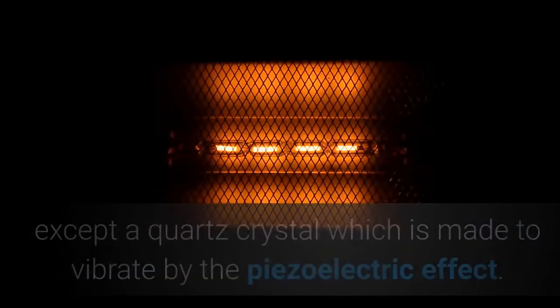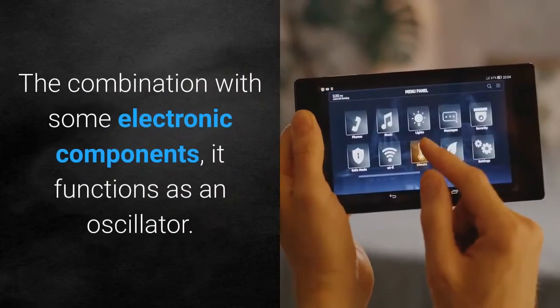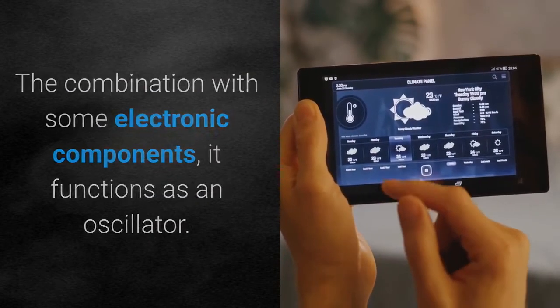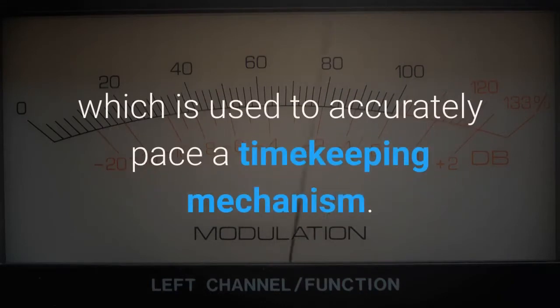Electronic movements, also known as quartz movements, have few or no moving parts, except a quartz crystal which is made to vibrate by the piezoelectric effect. In combination with some electronic components, it functions as an oscillator. It resonates at a specific highly stable frequency, which is used to accurately pace a timekeeping mechanism.